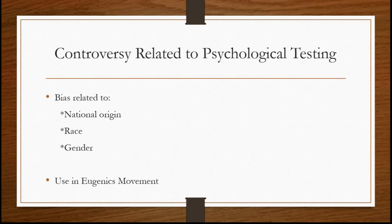Another controversy historically related to psychological testing is that in the early 1900s it was used in what was called the eugenics movement — a movement that tried to keep less desirable people from reproducing and control them within the social milieu. Early psychological tests were used to test the intelligence of people in asylums and state psychiatric hospitals. If their intelligence scores were below a certain level, they were forcibly sterilized — a surgery done against their will that kept them from ever having children. It was really using these tests to play God in someone's life, and you can see how that would lead to controversy in the use of psychological testing.